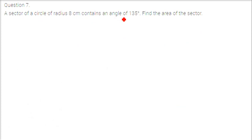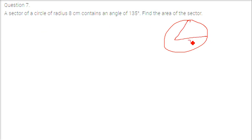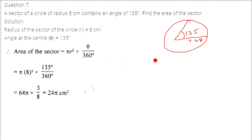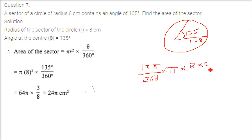A sector of a circle of radius 8 centimeter contains an angle of 135 degrees. Find the area of the sector. Directly applying the formula: theta by 360 into pi r squared, that is 135 by 360 into pi into 8 into 8. Solving this gives 24 pi.